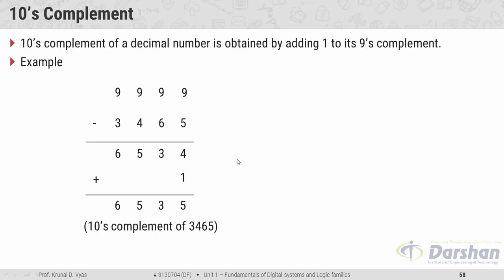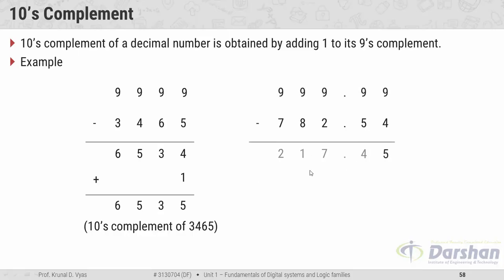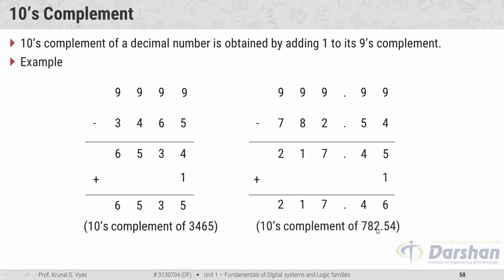For the second example with a fractional portion, to find the 10's complement of 782.54: first find the 9's complement, then add 1 to the result, giving 2170.46 as the 10's complement of 782.54. Unlike 1's complement and 2's complement — which have shortcuts — for 9's complement and 10's complement you must follow this full procedure. Thank you.